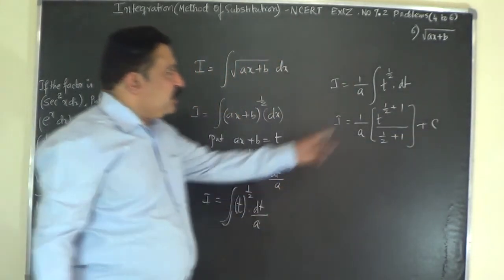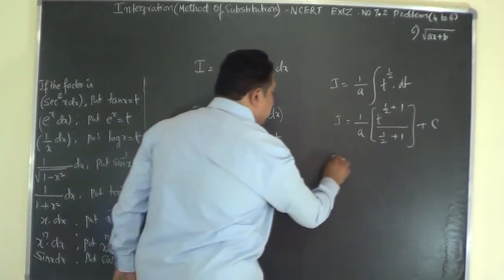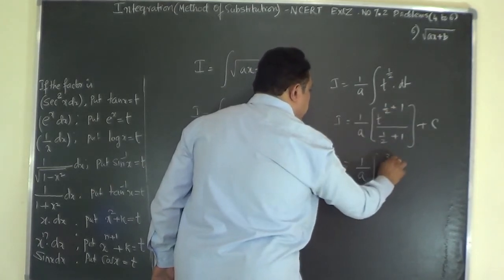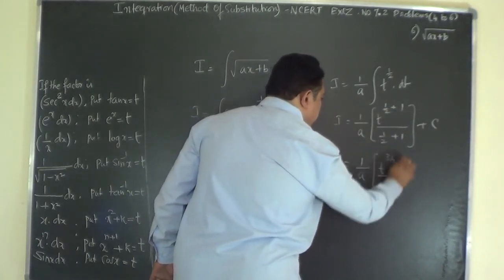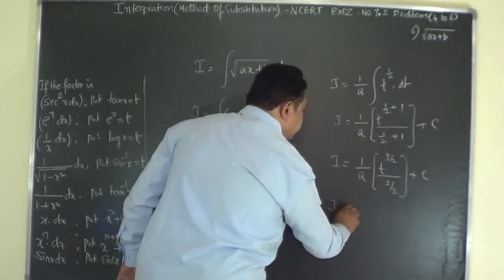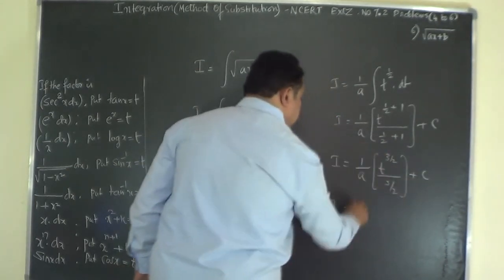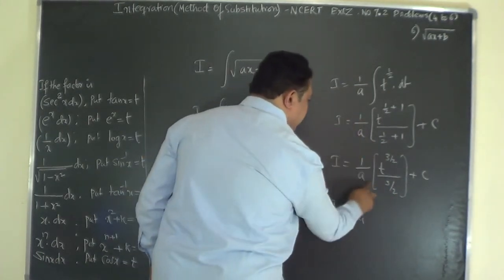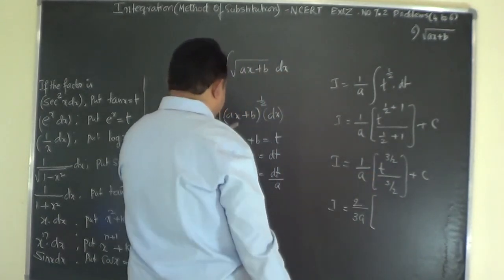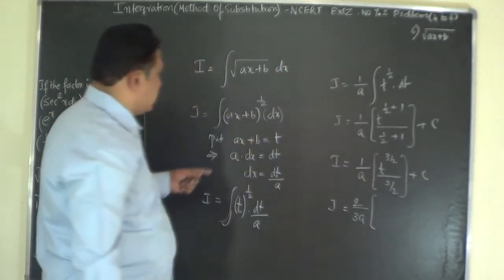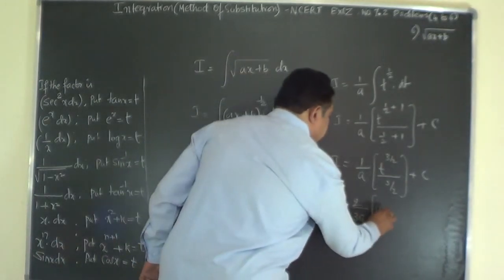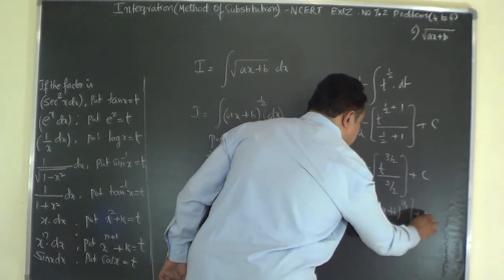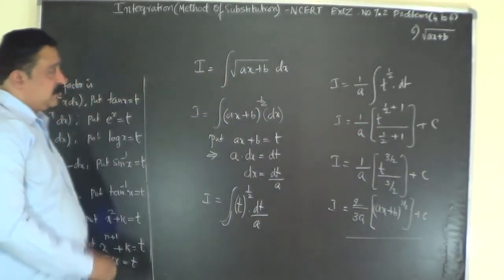Now simplify and substitute back. The 2 goes to the numerator, giving (2/3A) · t^(3/2) plus C. Since t equals ax + b, the final answer is I equals (2 / 3A) · (ax + b)^(3/2) plus the constant of integration C.